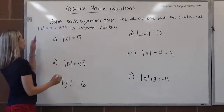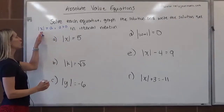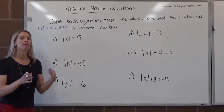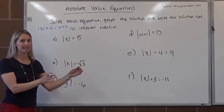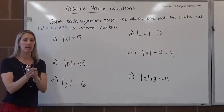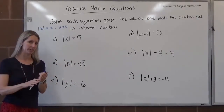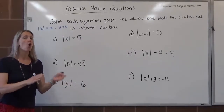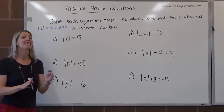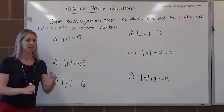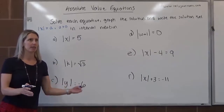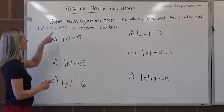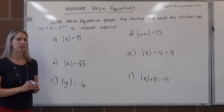If that's the case, there are two different solutions. So if we have the absolute value of x equals 27, then we know that inside the absolute value could be 27, since the absolute value of 27 is 27, or inside the absolute value could be negative 27, since the absolute value of negative 27 is also equal to 27. So here there are two cases to consider.